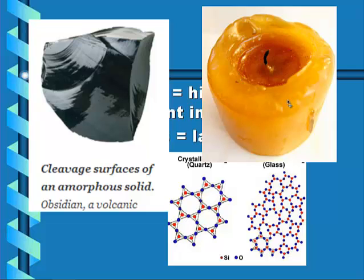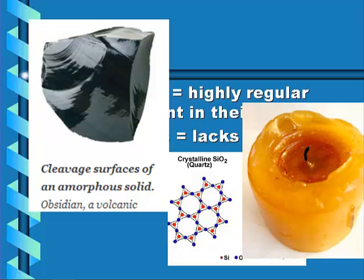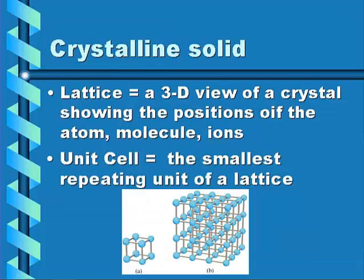Wax is an amorphous solid. Crystalline solids have a lattice and unit cells. A lattice is the 3D view of a crystal showing the positions of the atoms, molecular ions, while unit cells are the smallest repeating unit of the lattice. Here we can see our unit cell, and those make up our lattice.